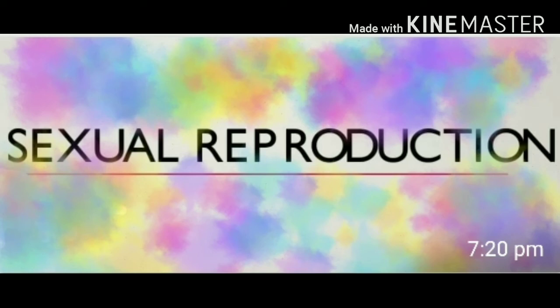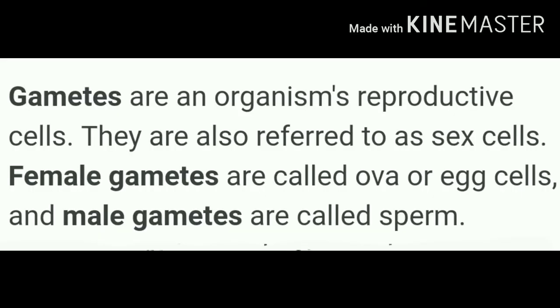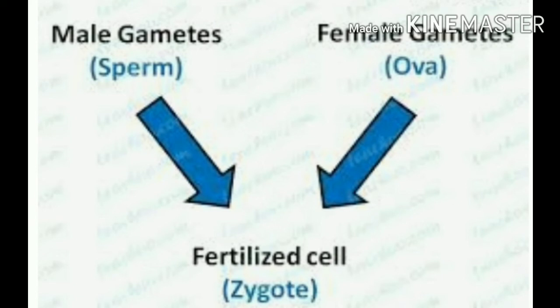So far, we have discussed asexual mode of reproduction. Next, sexual reproduction. Sexual reproduction involves the two sexes, namely male and female. The male sexual unit is known as the male gamete, while the female sexual unit is known as the female gamete. The formation of gametes and their fusion constitutes sexual reproduction.